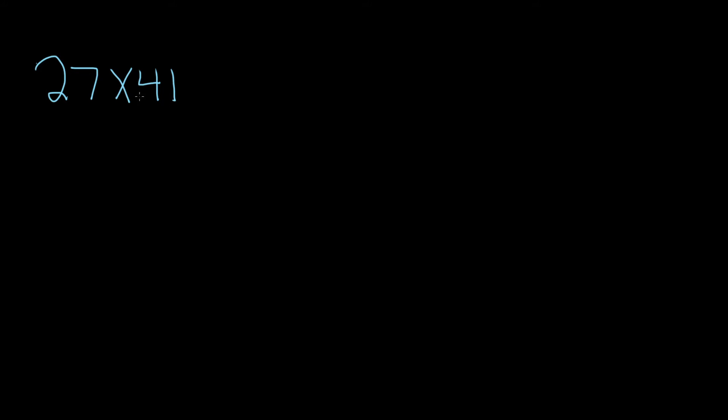In this case, they both have the same number of digits, so it doesn't matter. So 27, and then here we have 41. You want to line them up, so you have the ones place and the tens place. Then you draw a line.